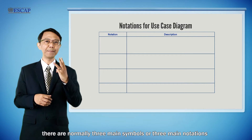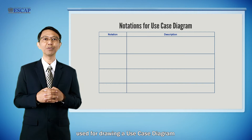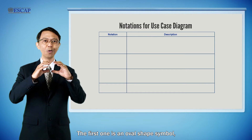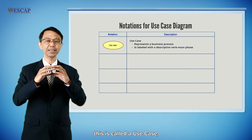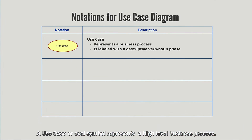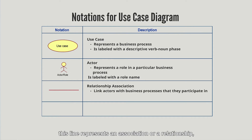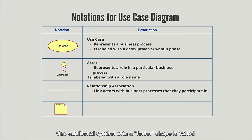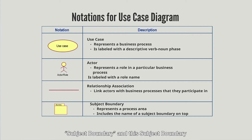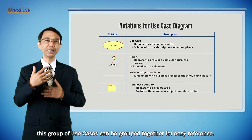Within any use case diagram, there are three main symbols. The first is an oval shape symbol called a use case, which represents a high-level business process. The second is a human shape symbol representing an actor or stakeholder. The third is a straight line representing an association or relationship, normally connecting an actor and a use case. One additional symbol with a folder shape is called a subject boundary, used to group a set of use cases together for easy reference.